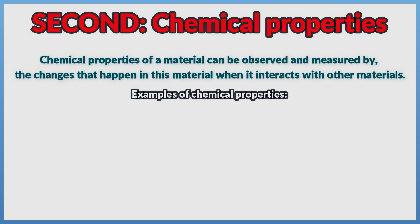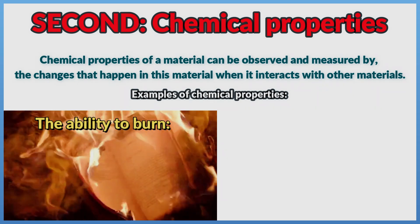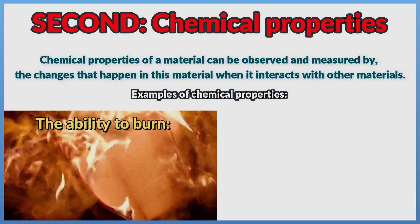Examples of chemical properties: The ability to burn. Such as when a paper interacts with fire, the paper becomes ash.